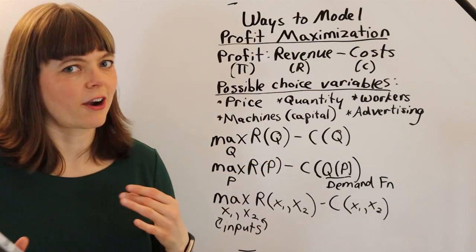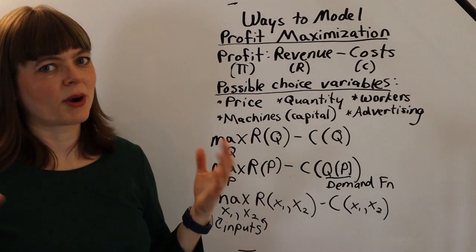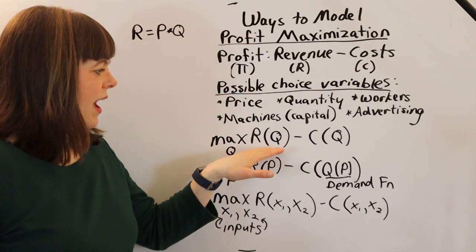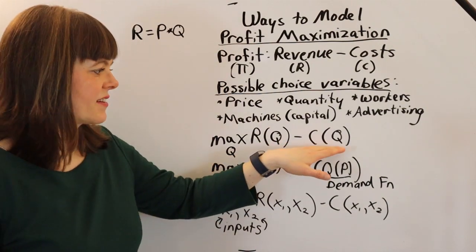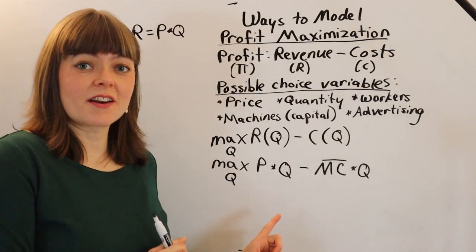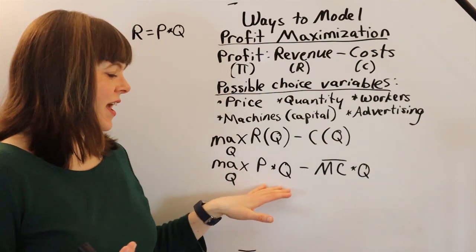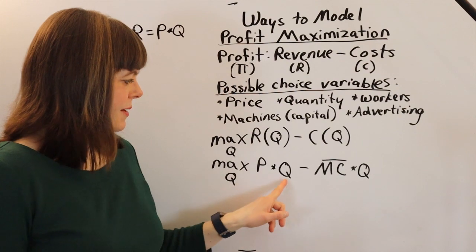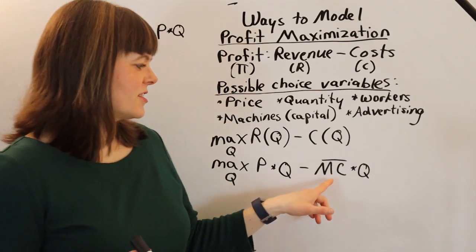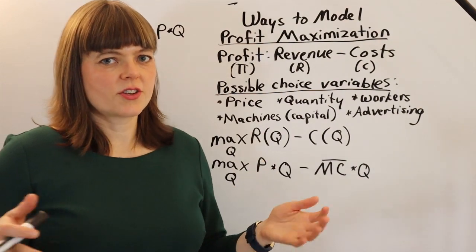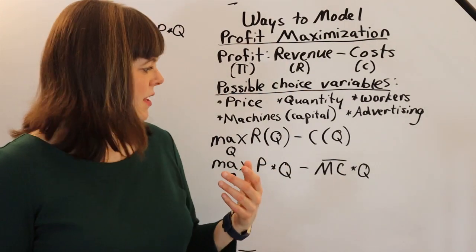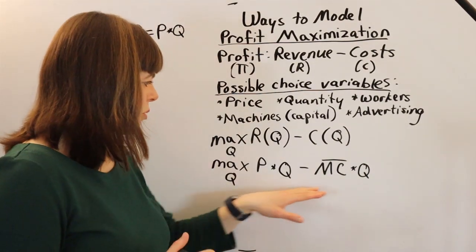We might want to specify revenue more carefully. Revenue is price times quantity. Starting with quantity as the choice variable: we've got price times quantity for revenue and marginal cost times quantity for costs. Anytime marginal cost is exogenous — say it costs ten dollars to produce a t-shirt — total cost is ten dollars times quantity, which is a linear function. Many models use this formulation.